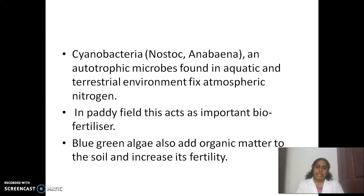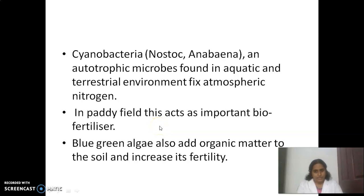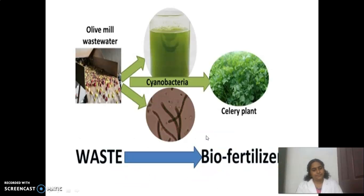Fourth example: cyanobacteria — such as Nostoc and Anabaena — are autotrophic microbes found in aquatic and terrestrial environments that fix atmospheric nitrogen. In paddy fields, they act as an important biofertilizer. Blue-green algae also add organic matter to the soil and increase its fertility. Cyanobacteria can be cultured from oil mill waste water and added to fields.